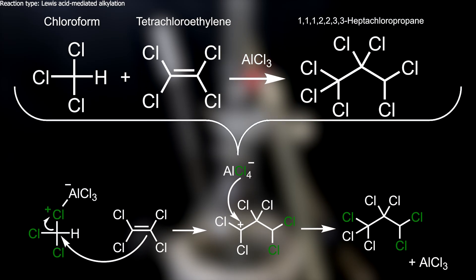In more detail, the aluminum chloride will coordinate to a chlorine atom from chloroform and increase its electrophilicity. This allows the electron rich double bond of tetrachloroethylene to attack the chloroform carbon. After which the tetrachloroaluminate ion is kicked off. The resulting molecule has a carbocation which can take up the chlorine from the tetrachloroaluminate ion to form the final product, 1,1,1,2,2,3,3-heptachloropropane, and regenerate the aluminum chloride catalyst.